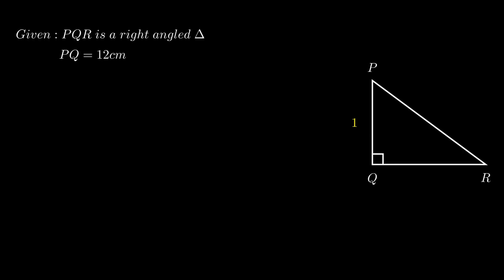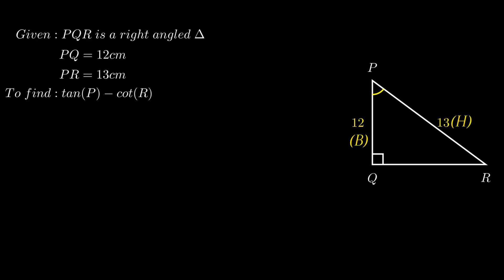Now let's solve some problems. Consider a right angle triangle PQR with side PQ equals 12 cm and side PR measuring 13 cm. We need to find the value of tan P minus cot R. To find tan P, we consider the acute angle at P. Side PQ is adjacent to angle P and is called the base. Side PR is the hypotenuse and side QR is the perpendicular. Tan P equals the ratio of perpendicular to base, which is QR over PQ. But we don't know the value of QR.